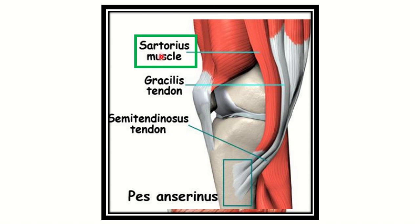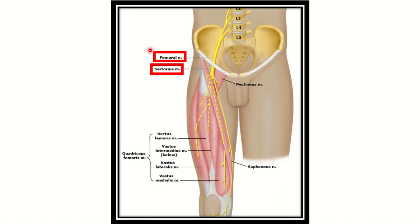Now we have to find out the nerve supply of the sartorius muscle. It is a muscle of the anterior compartment of the thigh, originating from the anterior superior iliac spine and inserting into the medial aspect of the tibia. We can see one branch of the nerve passing through it.